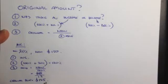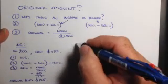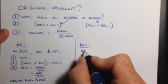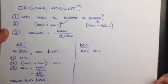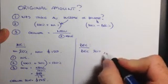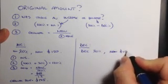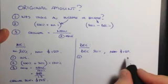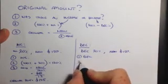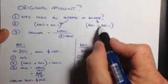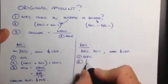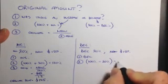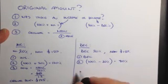Now let's look at a decrease. The jeans have been decreased by 20% and are now selling for $150 — what was the original price? Step one: there was a decrease. Step two: since there was a decrease, we use 100% minus the decrease percent, so 100% minus 20% equals 80%.